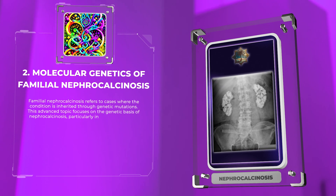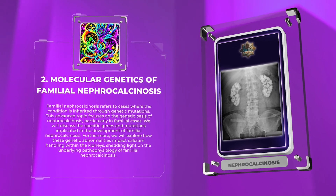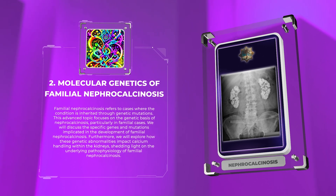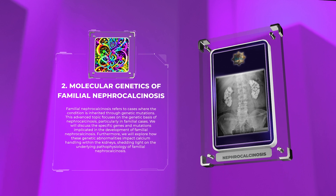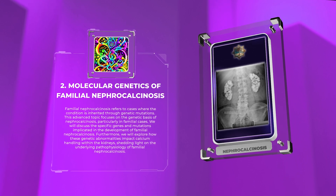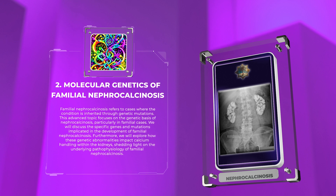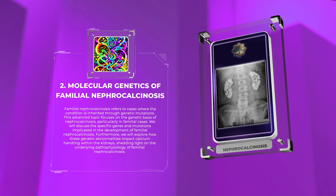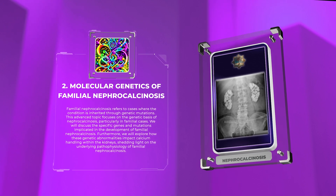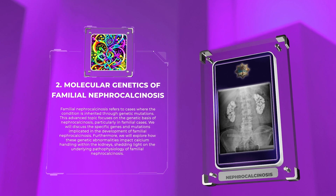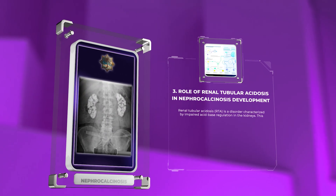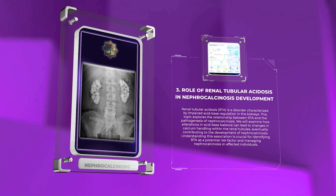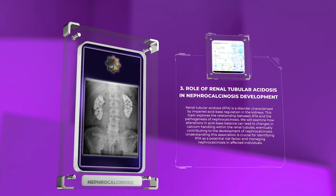Familial nephrocalcinosis refers to cases where the condition is inherited through genetic mutations. This topic focuses on the genetic basis of nephrocalcinosis, particularly in familial cases. We will discuss the specific genes and mutations implicated, and explore how these genetic abnormalities impact calcium handling within the kidneys, shedding light on the underlying pathophysiology of familial nephrocalcinosis.